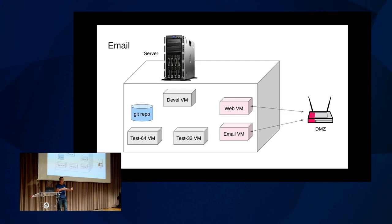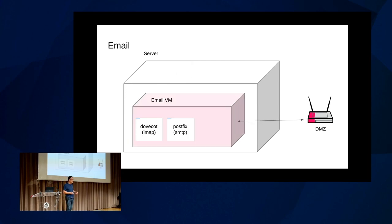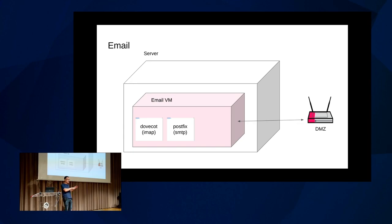On my server I also have my web VM and email VM, attached to my firewall's DMZ zone. The server has two ethernet ports — one goes to the internal network, one to the DMZ zone. The VMs only have access to the DMZ ethernet port. I use Dovecot for IMAP, so everything connects to my email server and I can read my email from any machine and see the same thing everywhere. And Postfix for SMTP.